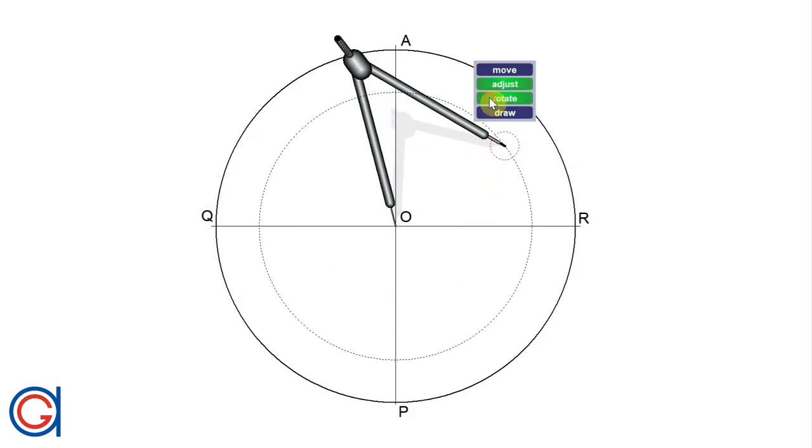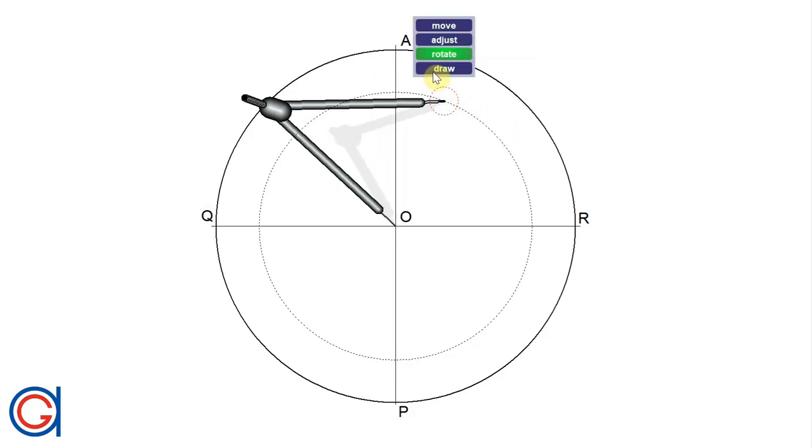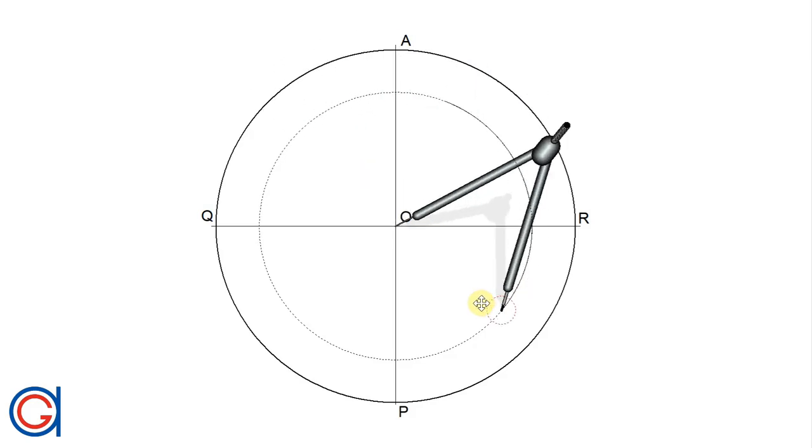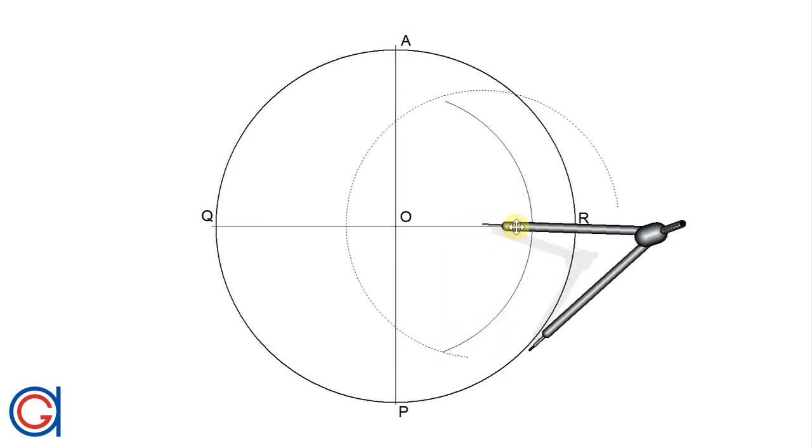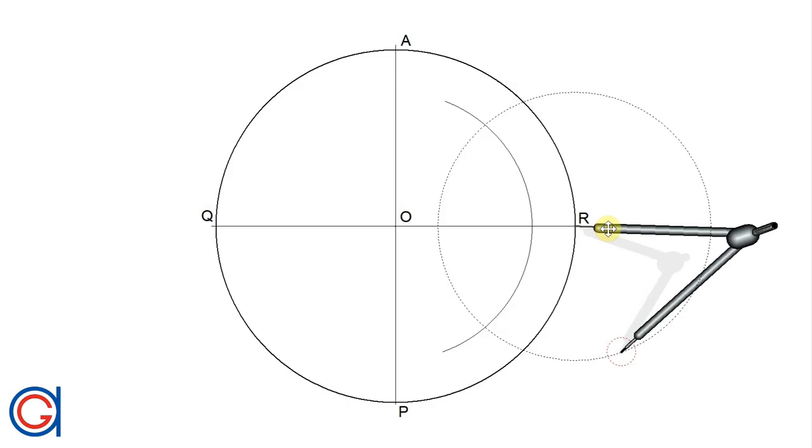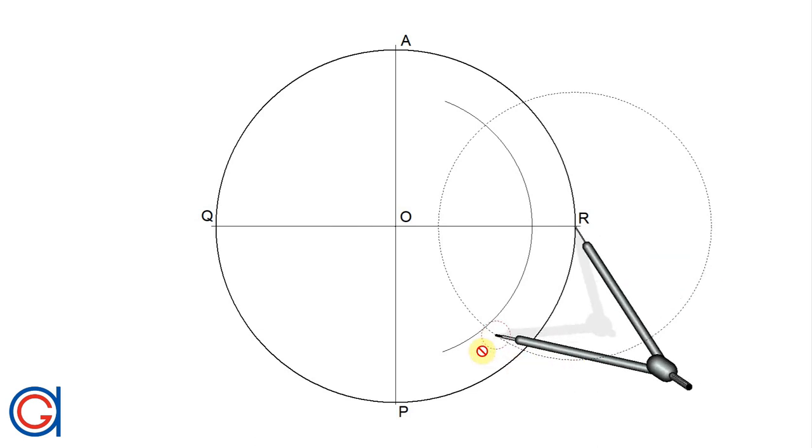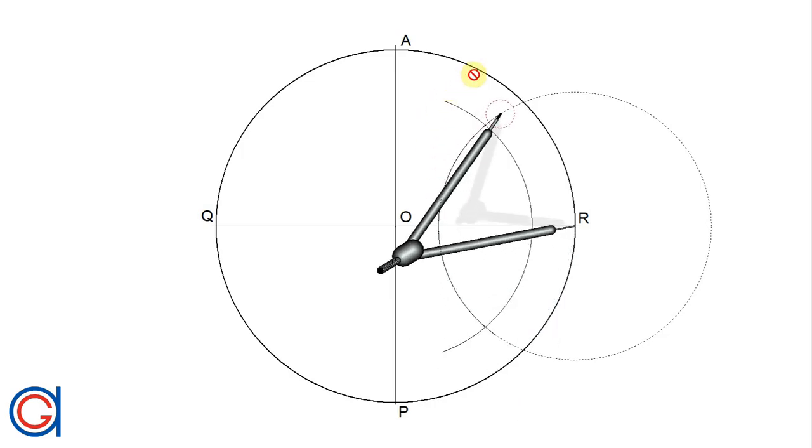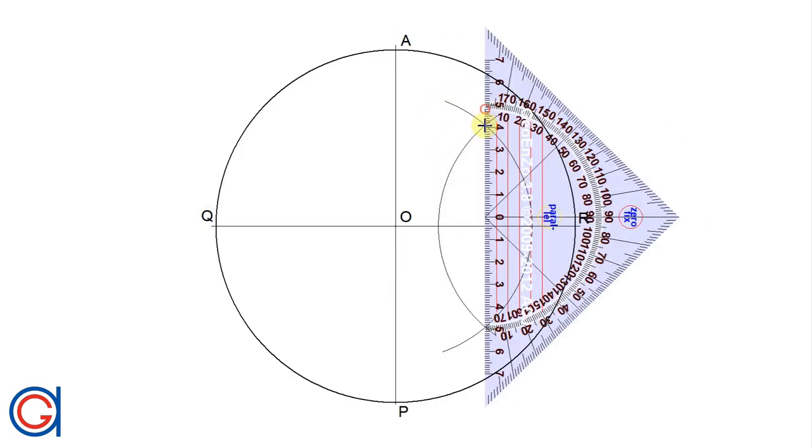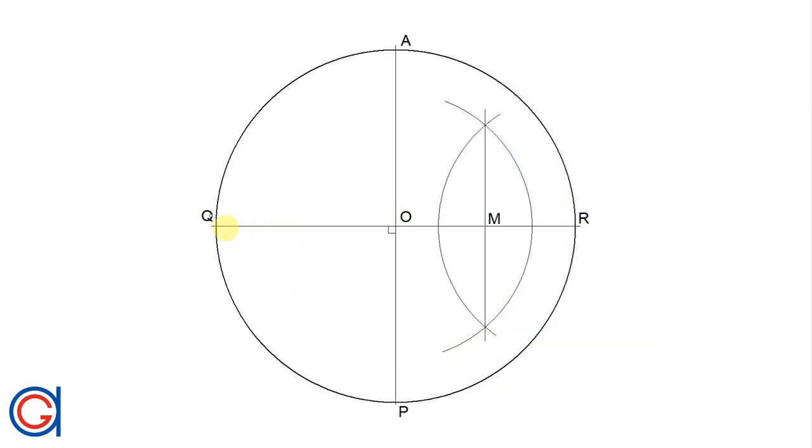Now, the next step, we are going to calculate the perpendicular bisector of the radius OR. To do this, with our compass set on point O and the radius slightly longer than half the radius OR, we scribe an arc above and below the radius. And now, with the same radius and the compass centered on point R, we scribe another arc which intersects our previously drawn arc at two points. We will join these two points and where it cuts the radius OR, this will be the midpoint M of the radius.